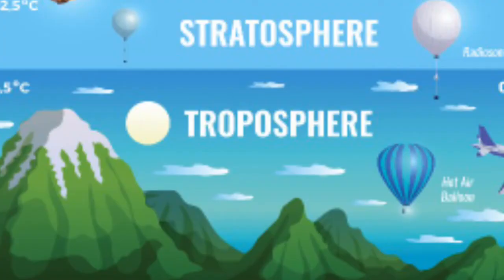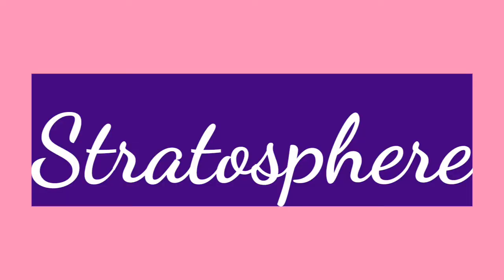Troposphere is the lowest layer. All changes in the weather occur here — such as thund, baarish, dhup — ye sab isi layer mein hoti hai. Next is stratosphere.